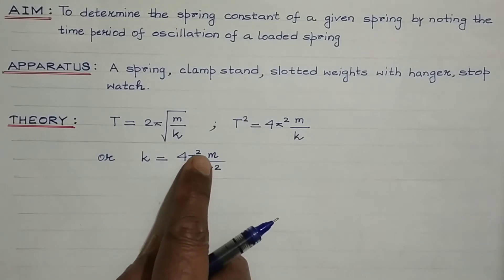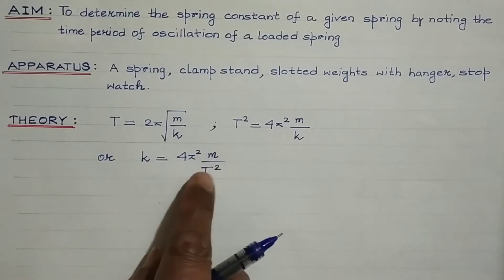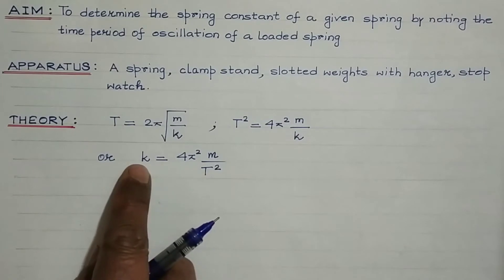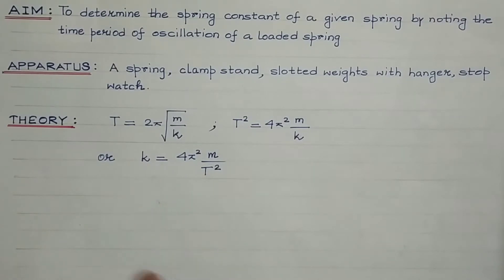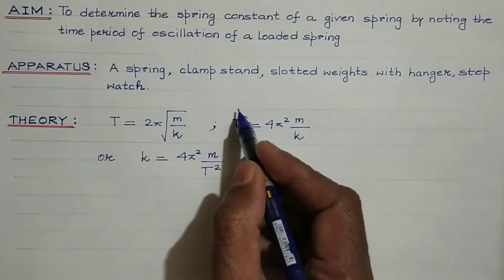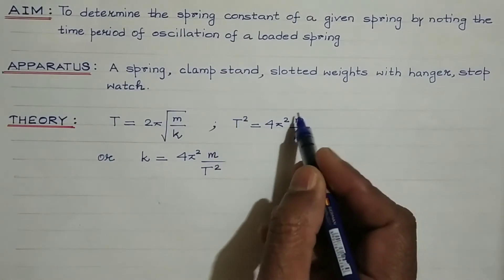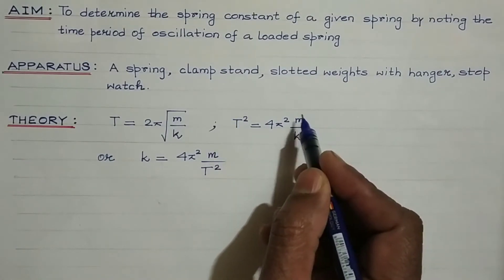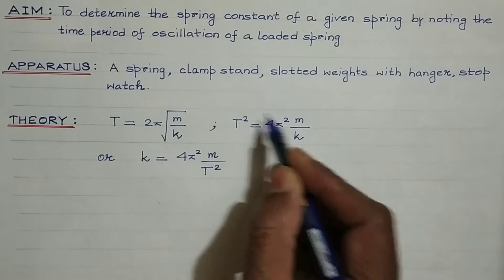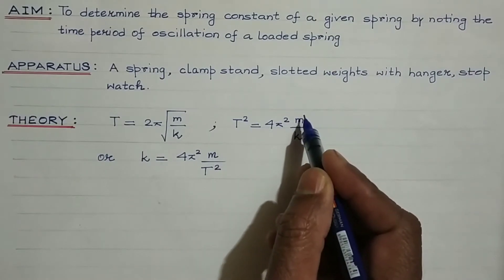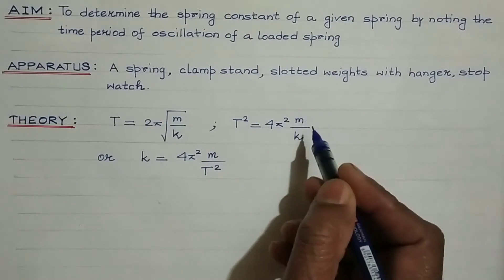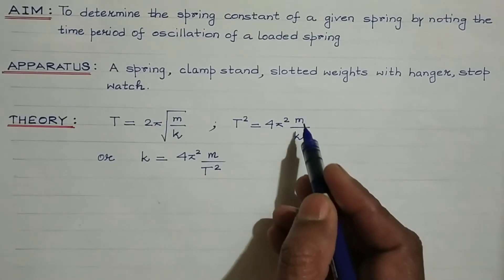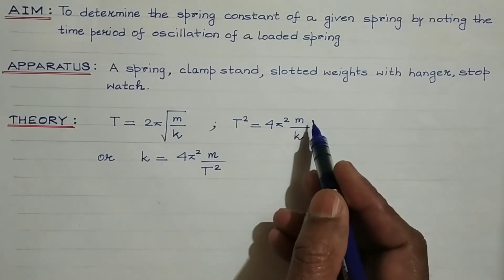By knowing the value of m and noting down the time period of oscillation, we can obtain the value of k. We can also plot a graph between T squared and m, and the nature of that graph would be a straight line. We need to consider different masses and note the time period in each case.